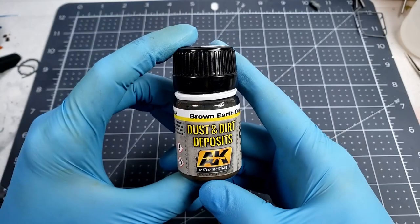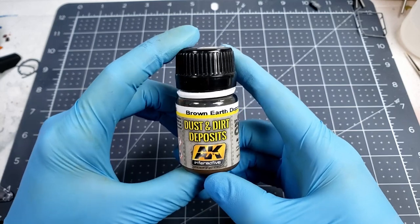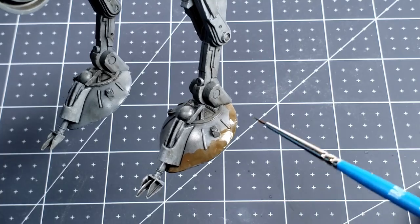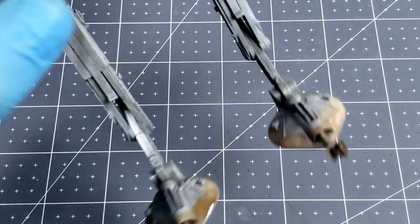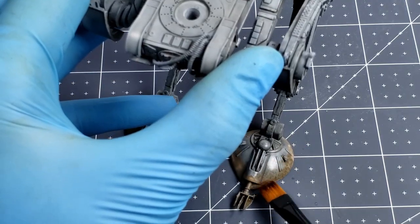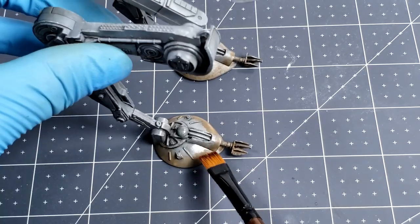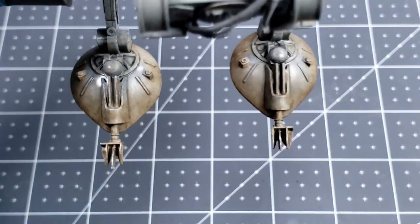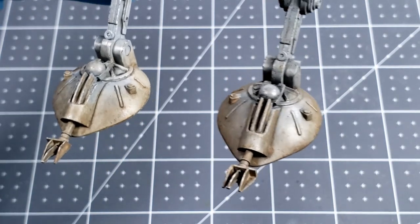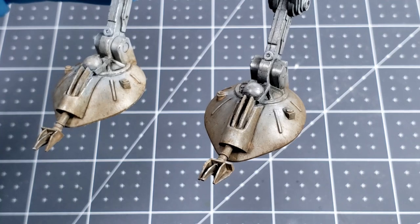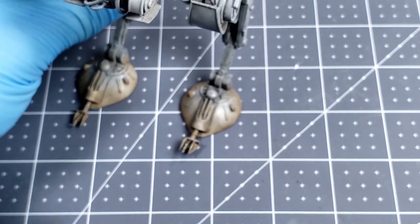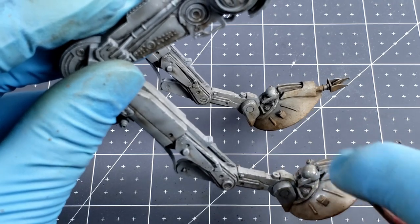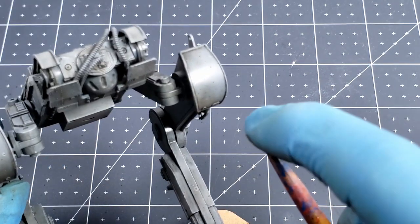Next up was to apply some earth effects. For this I used the brown earth dust and dirt deposit enamel product from AK Interactive. I wanted to have some heavier deposits on the feet and some dirt splashes up the legs and head. To be honest the feet didn't really turn out how I'd hoped. I couldn't manipulate the product as easily as the others and I couldn't get it to feather very well. I ended up settling for this dirty look. I'll definitely have to practice with this more. The dirt spray on the other hand worked very nicely with a large brush flicking material onto the model.